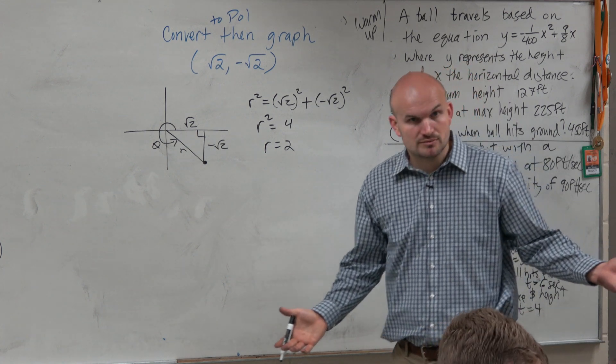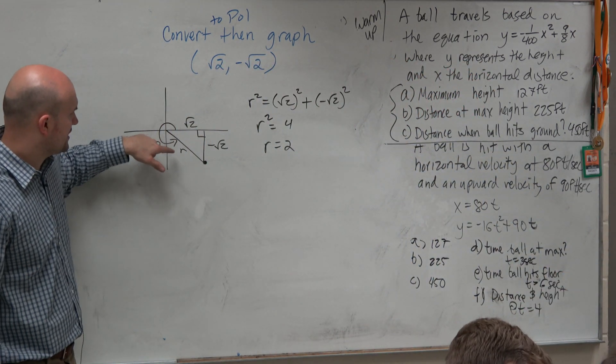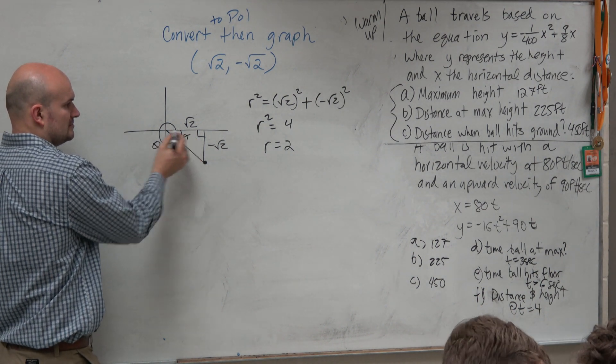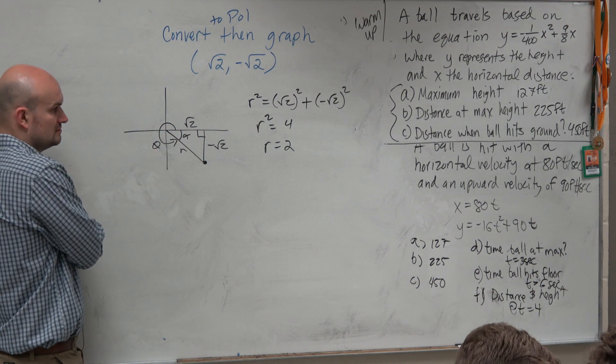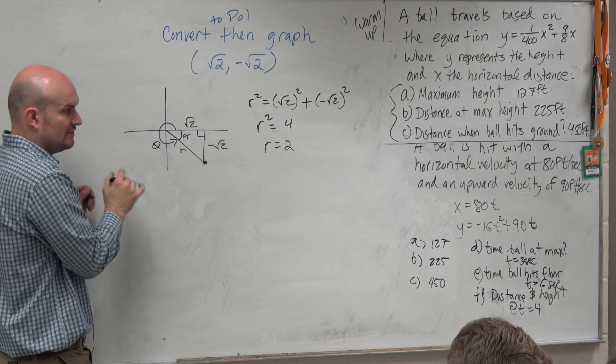So now we know the radius is equal to 2 if we're going to graph this in polar form. And now let's go and figure out. Now, we can't figure out theta based on this information, but can we figure out alpha? Yeah, that's just the angle in the triangle. So what relationship would I want to do if I know these two sides to find alpha?